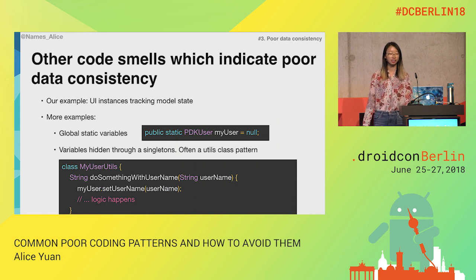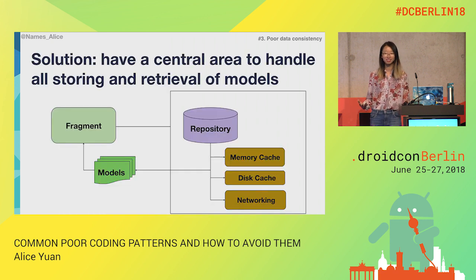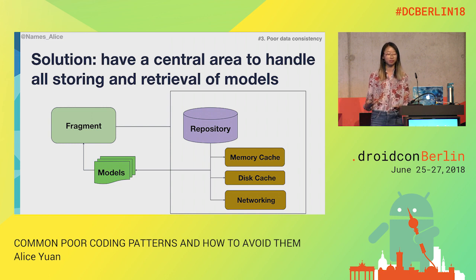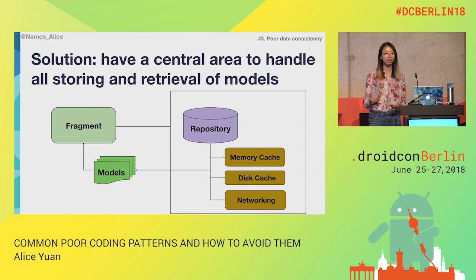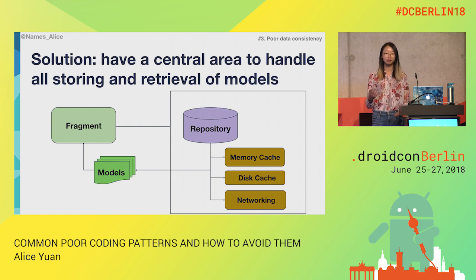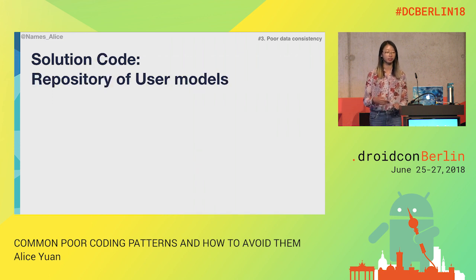There are a slew of examples where you could be introducing poor data consistency into your application. Perhaps you have public static variables that you're updating throughout your application just to track a single variable. Another thing is that you might have singleton patterns where you have this one variable you want to keep track of and you set it in that singleton — this is really bad. Our solution is kind of obvious: we should just have a central area to handle storing and retrieval of all of these models. We call this a repository, and that repository can be as simple or as complex as it needs to be.